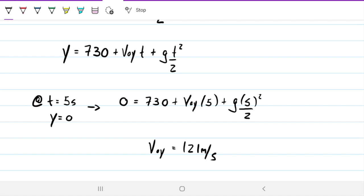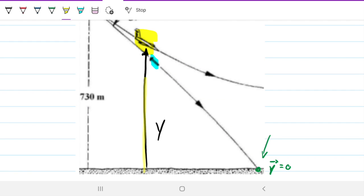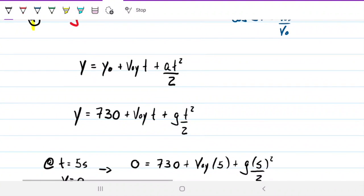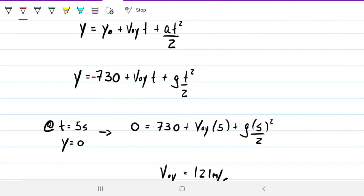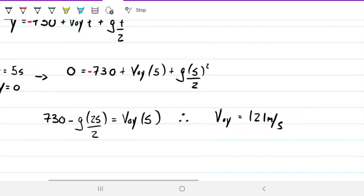There's just one small detail, which is that we created, we determined that downwards was positive. And if you remember the Y0 is going upwards. So the 730 that we drew before as the Y0 has to be negative 730, because it's going upwards instead of going downwards. So we're going to have equating this negative 730 minus g times 25 over 2 equals V0Y over 5.